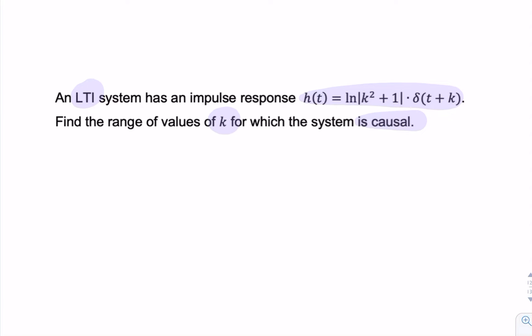So remember, when given an impulse response, the condition for causality is that the impulse response is zero for t less than zero.